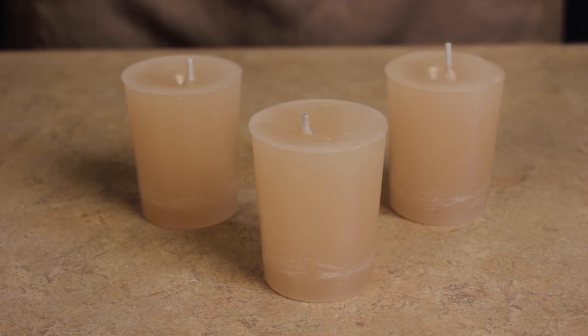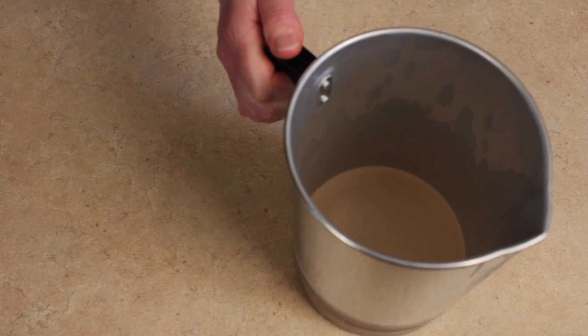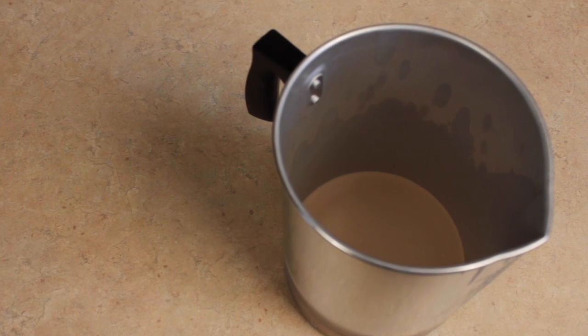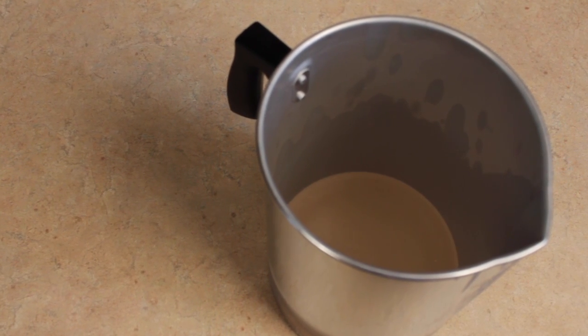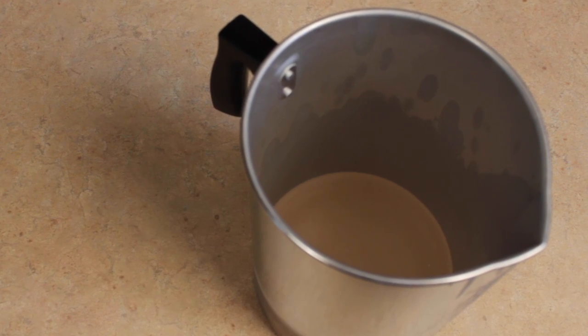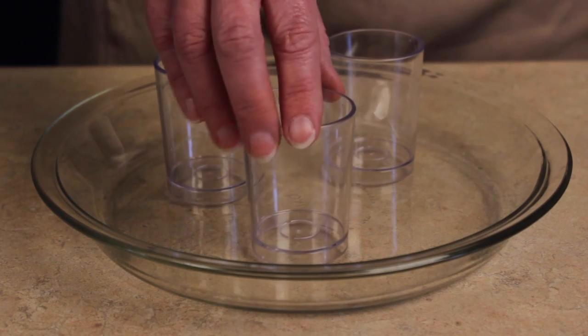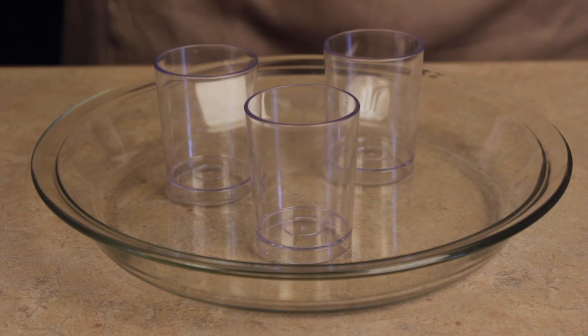The kit allows you to make three votive candles at a time and reserve the extra wax with color and scent in the pouring pot to make additional candles once the first batch is finished. To get started, place the three votive cups in the shallow container.